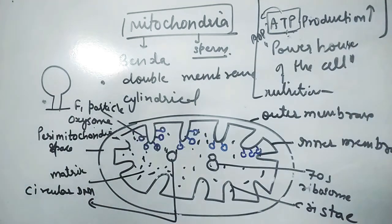Mitochondria complete. The next cell organelle is called chloroplast or plastid.